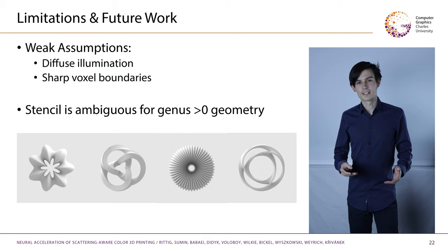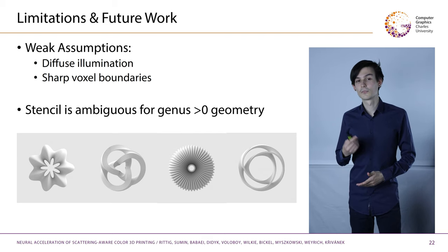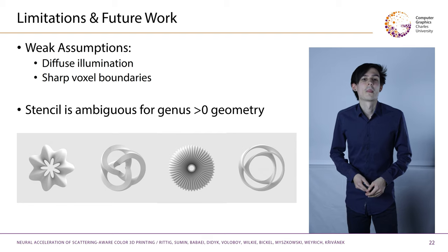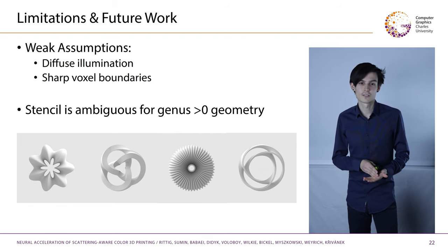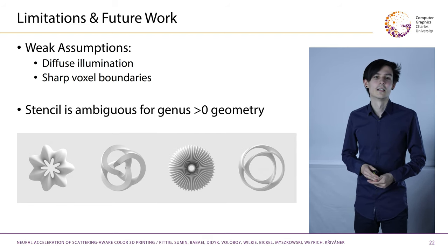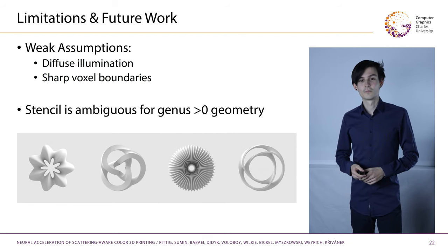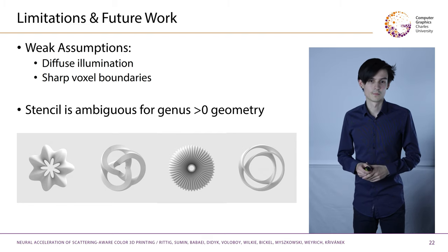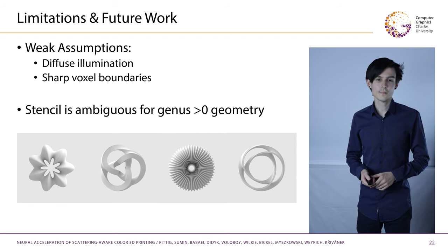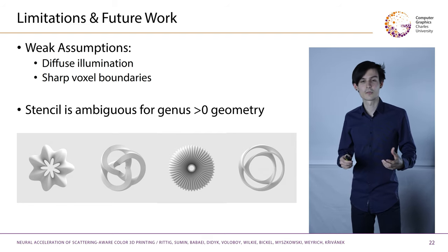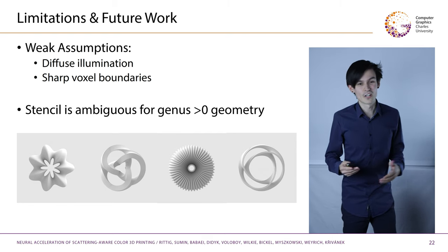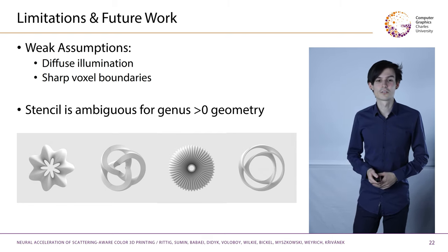Our method also has its limitations. We have two weak assumptions: one being diffuse illumination, although one could model more directional lighting similar to the related work. Secondly, our rendered dataset assumes a voxel to be a perfect sharp cube with sharp boundaries, which might not be entirely realistic because of material mixing during the print process — though one could re-render the dataset with some interpolation to simulate it. A more strict limitation is that the stencil representation is somewhat ambiguous for geometry that has holes inside, expressing itself as training instability, which we see as future work.